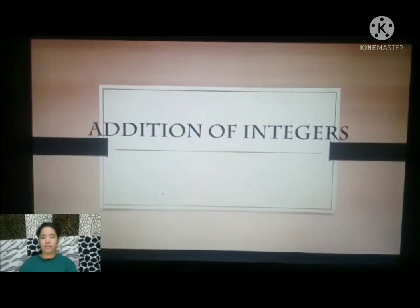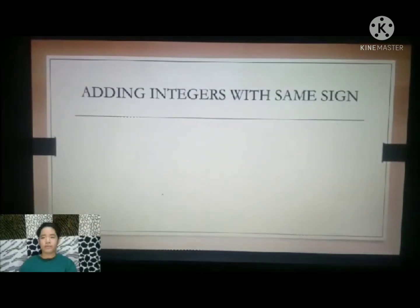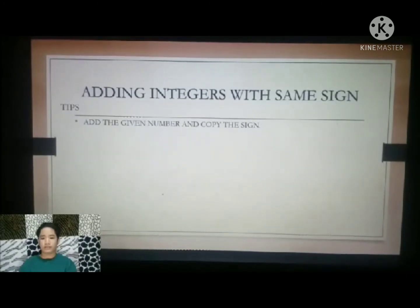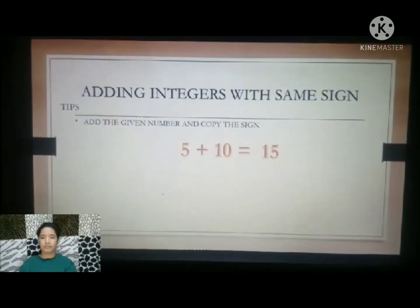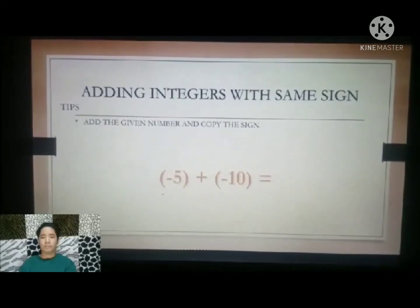Addition of Integers. Adding integers with the same sign. Tips: Add the given numbers and copy the sign. Example 1: Positive 5 plus positive 10 is equal to positive 15. Example 2: Negative 5 plus negative 10 is equal to negative 15.